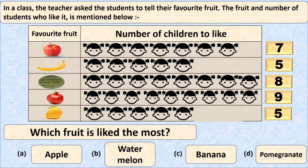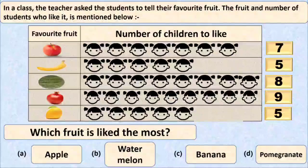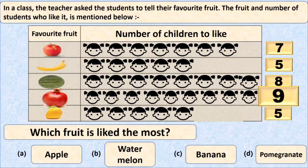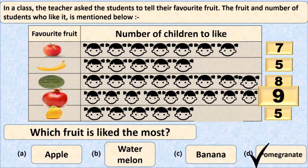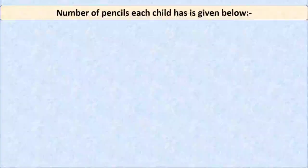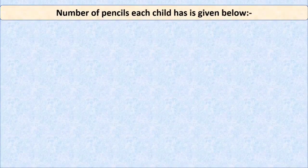The largest number here is nine, and nine students like pomegranate. So pomegranate is the fruit which is liked the most. Option D, pomegranate, is the right option and we will put a tick mark there.